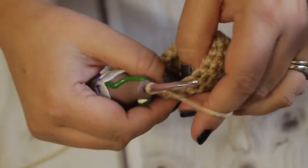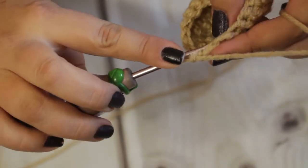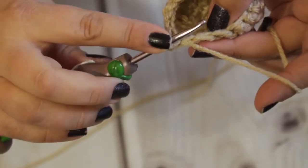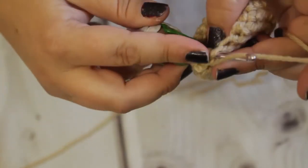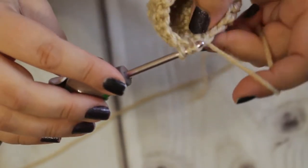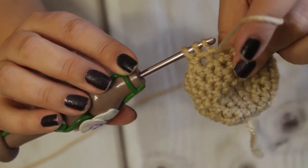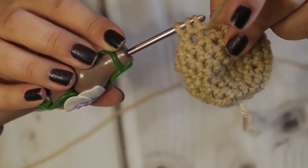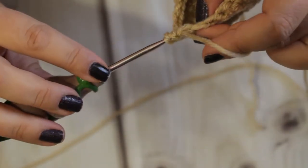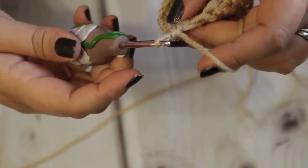So we are going to be taking two stitches and making them one. So we're just going to go ahead and pull up our loop and then we're going to go in again to the second stitch and pull up your loop, so you will now have three, and then you are going to pull through all three.